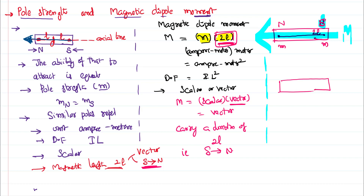A line passing through the magnet center, north pole, and south pole is called the axial line. A line passing through the magnetic center and perpendicular to the axial line is called the equatorial line.